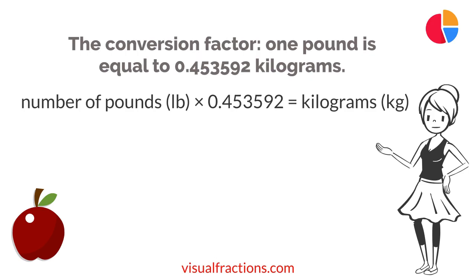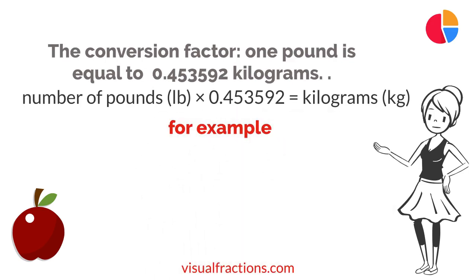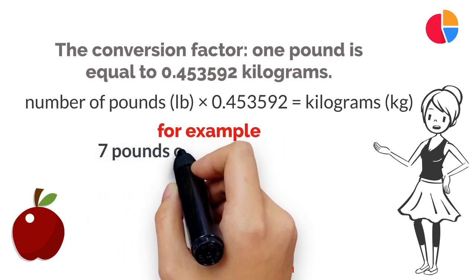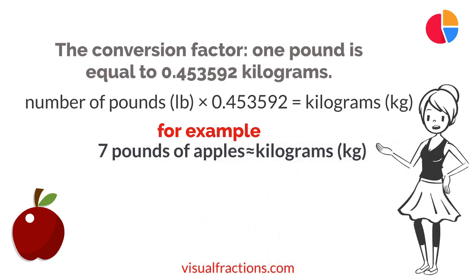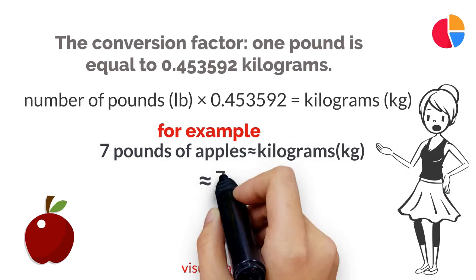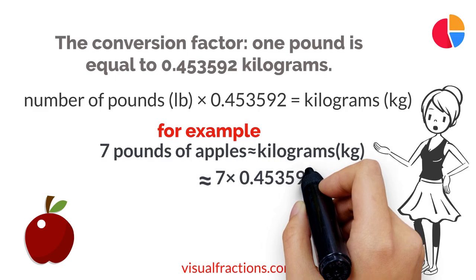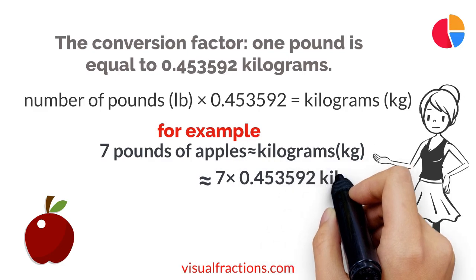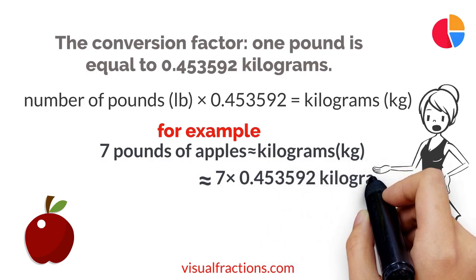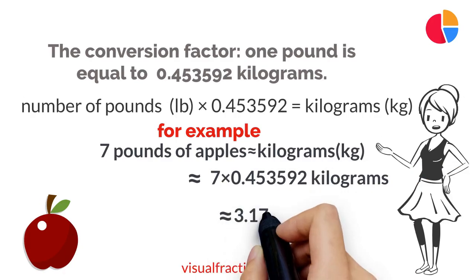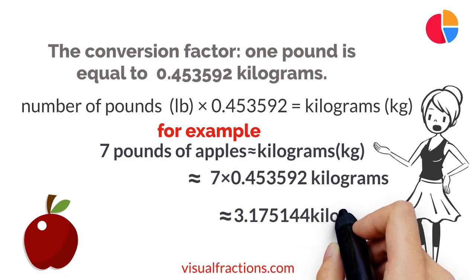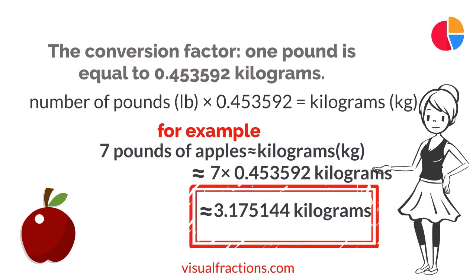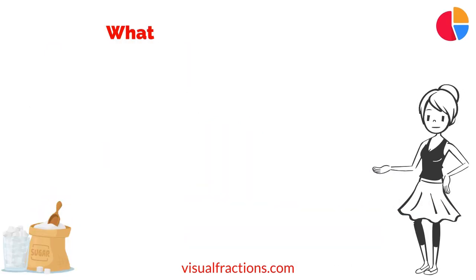Let's walk through an example. Suppose you have seven pounds of apples that you need to convert to kilograms. We start by multiplying seven by 0.453592. This gives us approximately 3.175144 kilograms.